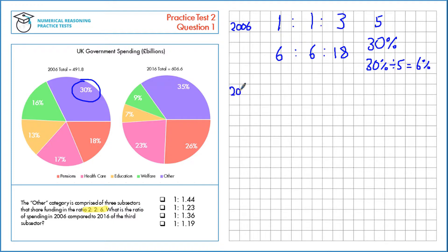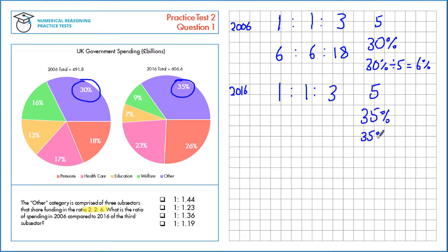Similarly, for 2016 we have the same ratio, 1 to 1 to 3, giving 5 total shares, but in 2016 it's 35%. If we take that 35% and divide it by 5, we'll get what one share is worth, which is 7%. Now we can fill in these: we've got two lots of one share, they're both 7%, and three lots of one share, which is 21%.